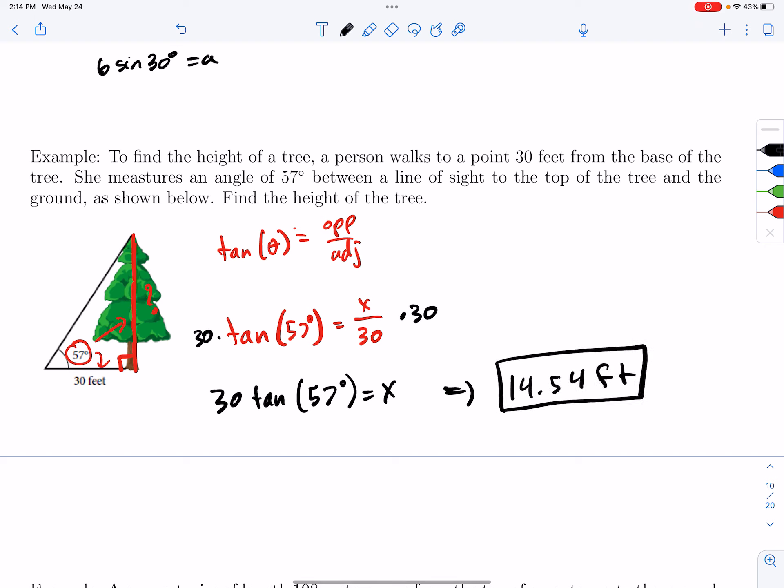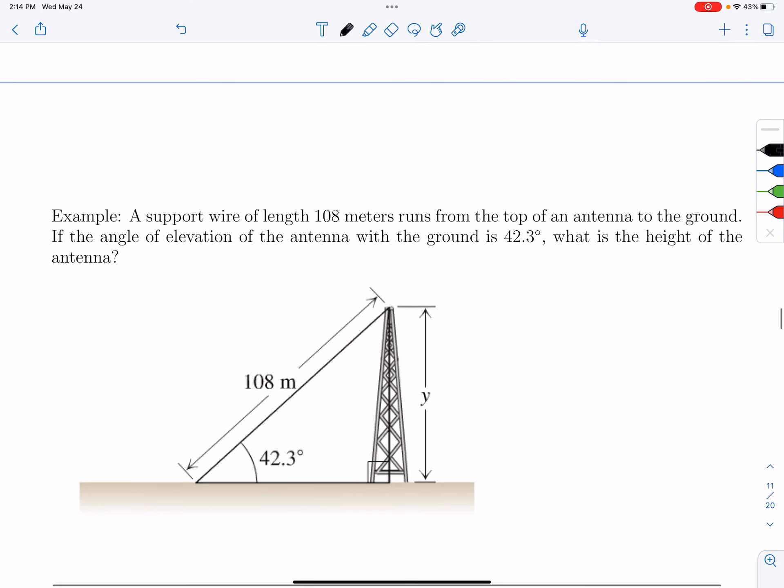Okay, and then we have one more here. It says a support wire of length 108 meters runs from the top of an antenna to the ground. If the angle of elevation of the antenna with the ground is 42.3 degrees, what is the height of the antenna? Alright, so in this case, I have the opposite and the hypotenuse. So again, opposite and hypotenuse is sine.